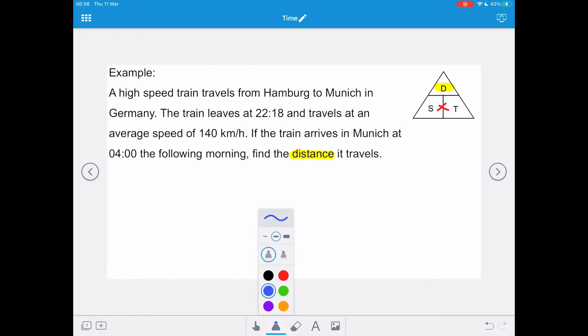So you can see that we've got the speed as part of the question, so we're looking for distance. The speed is 140 kilometers per hour, and we need to work out what the time interval is between 22:18 and 04:00 the following morning.